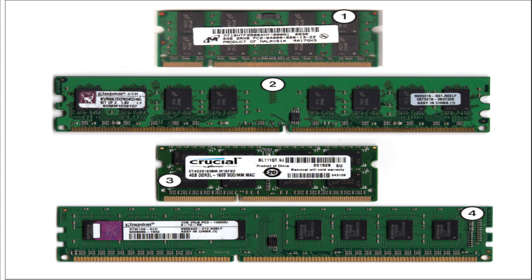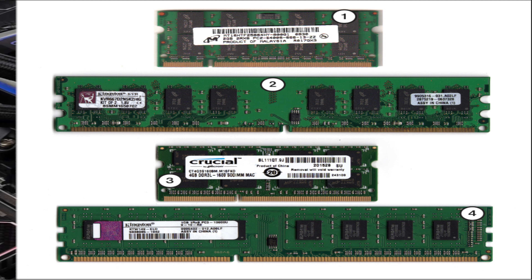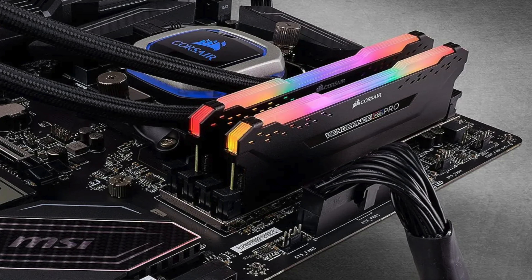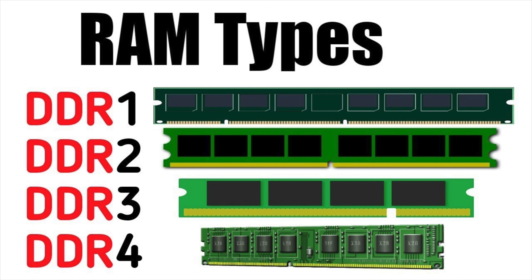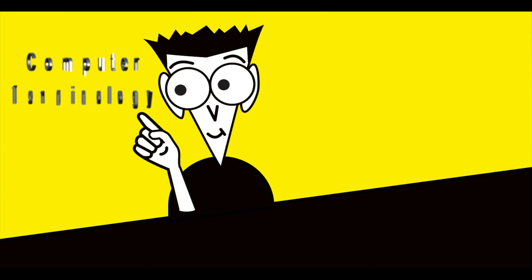There is a ton of information to share about RAM. However, I don't want to get too technical in this video as there's not enough time to go over it all. The main things to know are that RAM comes in different shapes and sizes, and you'll see different types of RAM for your computer system. Some RAM even has colors displayed on it. There are also different generations of RAM, ranging from DDR1 all the way through DDR5, which was just recently released.